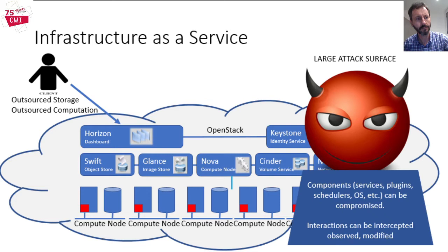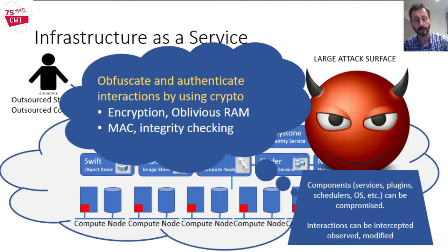How can we reduce the number of attack points in this attack surface? First, we can make use of crypto to obfuscate and authenticate interactions by means of encryption, oblivious RAM for preventing privacy leakage from memory access patterns, message authentication code, memory integrity checking, and so on. Interactions become unintelligible for the adversary. If the adversary wants to make sense out of this, then it needs to solve an underlying hard computational problem, which we assume cannot be done.